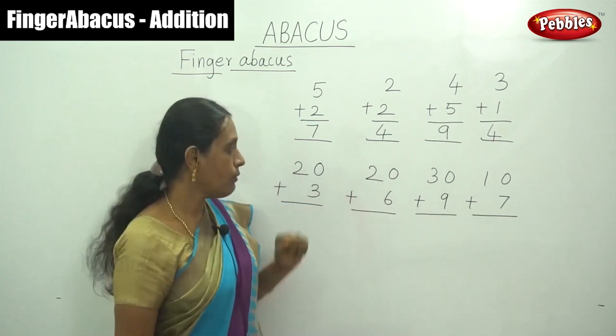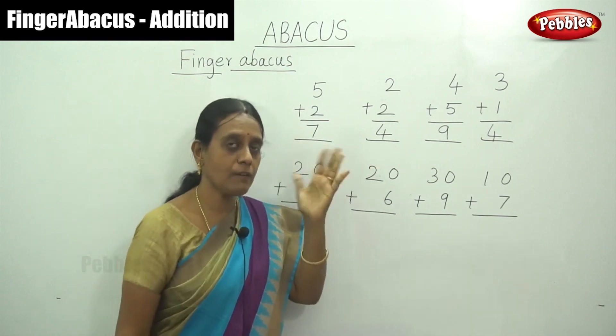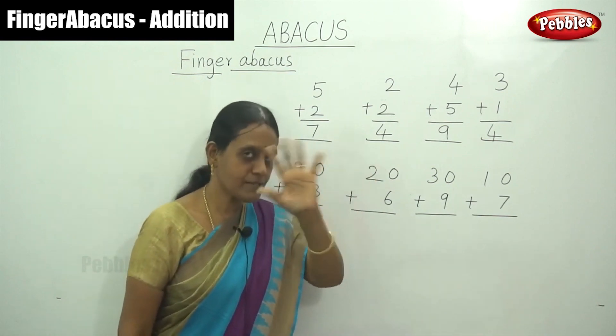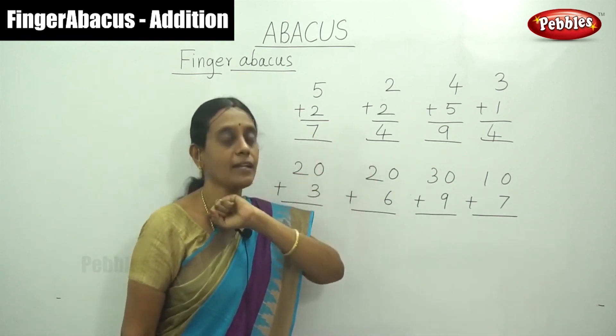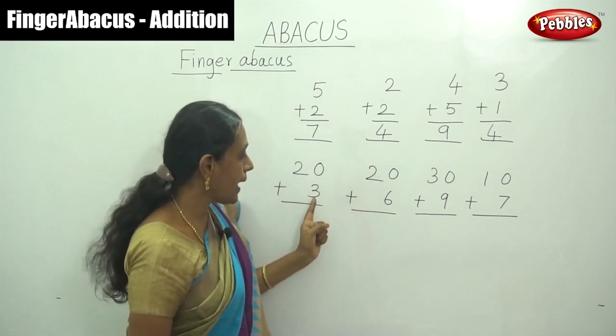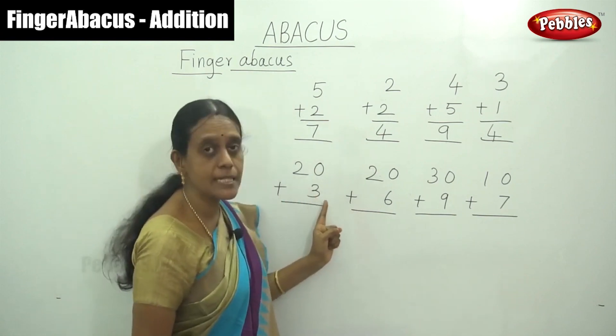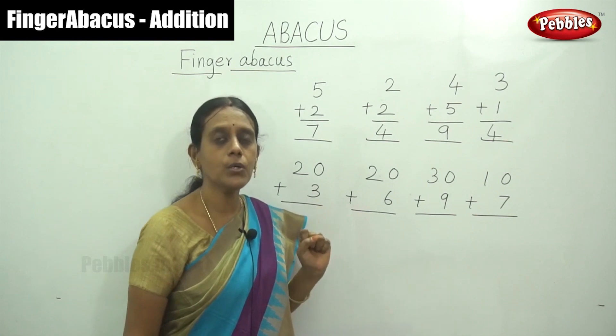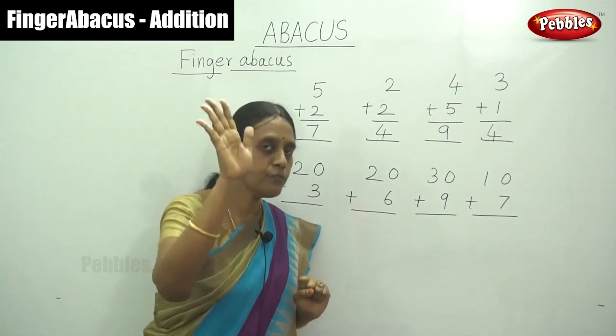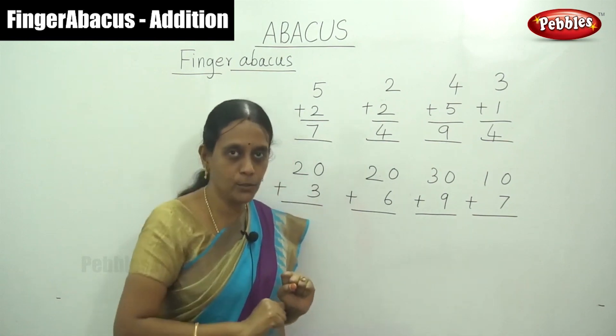So for these 2 numbers we have to use our left hand, that is 10 finger hand. And the lower number is the single digit number, so you have to use your right hand for 1s place.